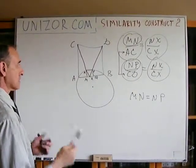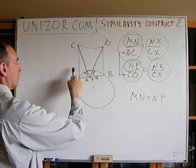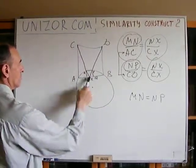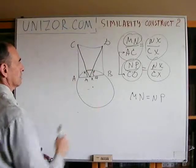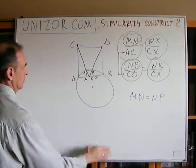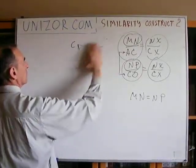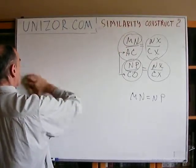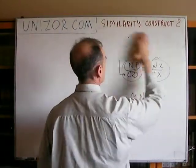The construction is: build a square on AB, find the midpoint of AB, connect it to the two far corners of the square. The proof is entirely based on the similarity of triangles.